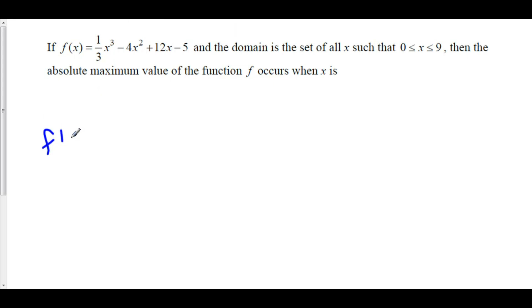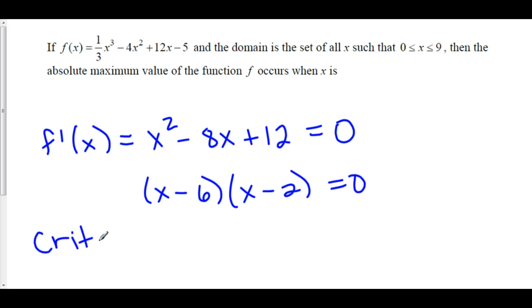To find the critical points, we're going to set f'(x) equal to 0 or see where it does not exist. So here we have x² - 8x + 12. Now, let's set this equal to 0. We can factor this as (x - 6)(x - 2), which means that we have critical points at x = 2 and x = 6.